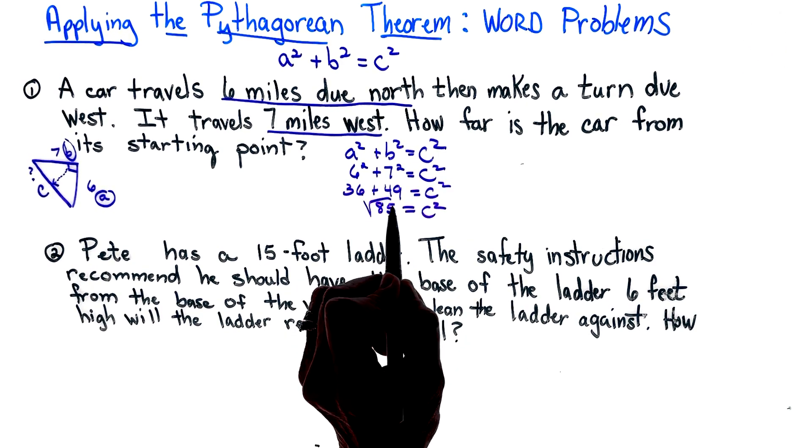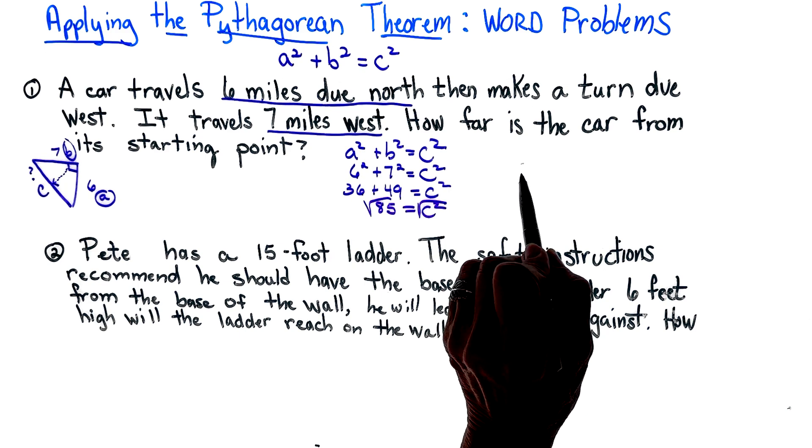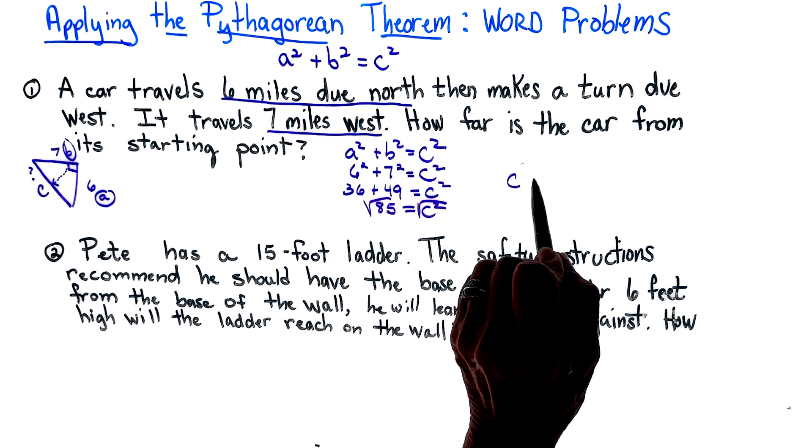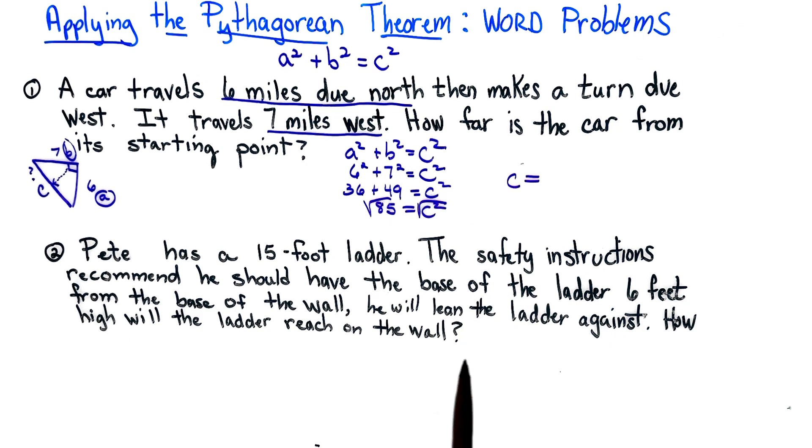When we add those we get 85 equals c squared. We do need to take the square root of both sides. Finally the c squared can become a c.